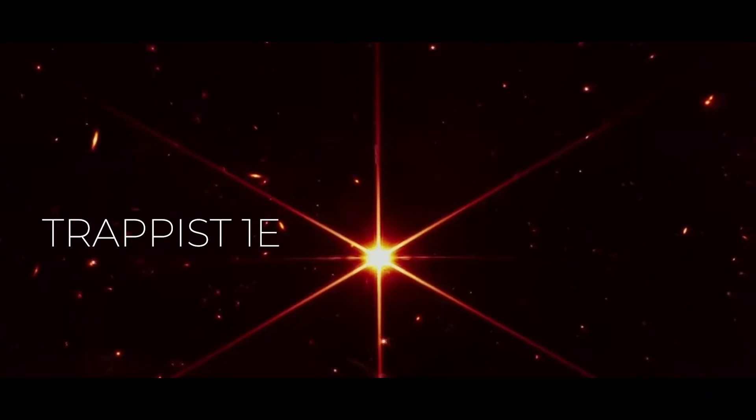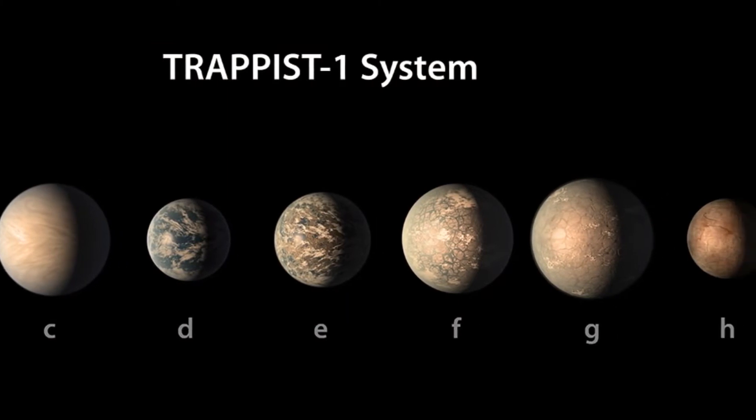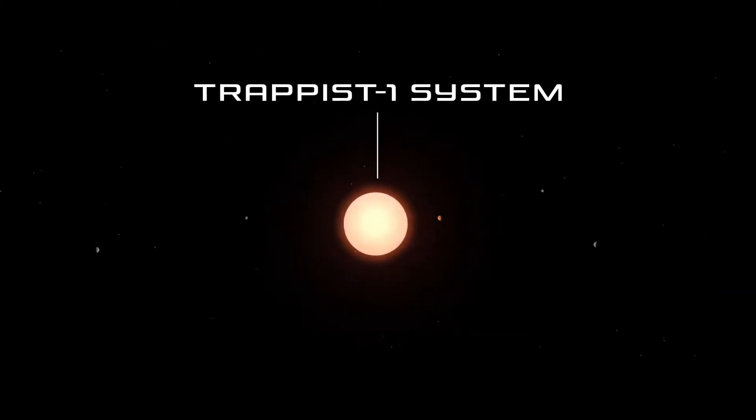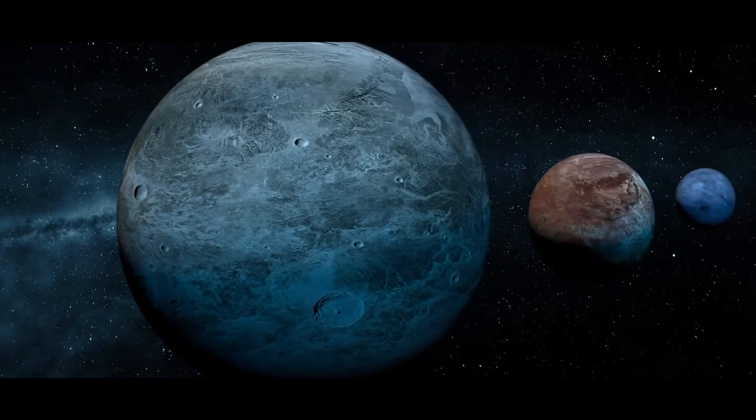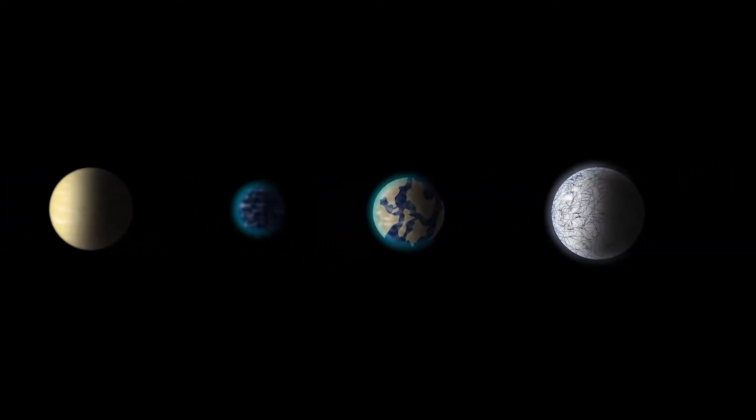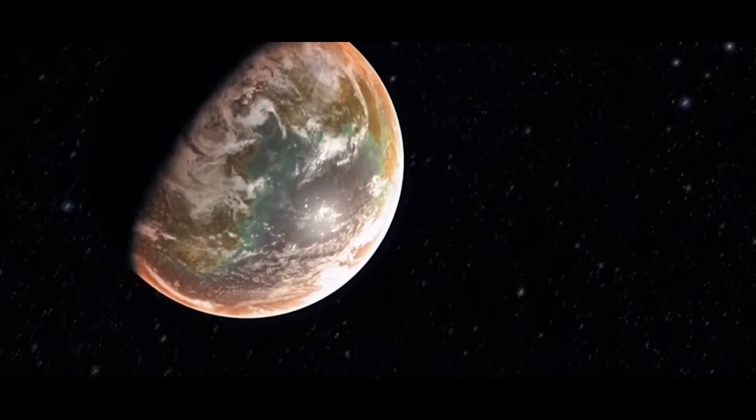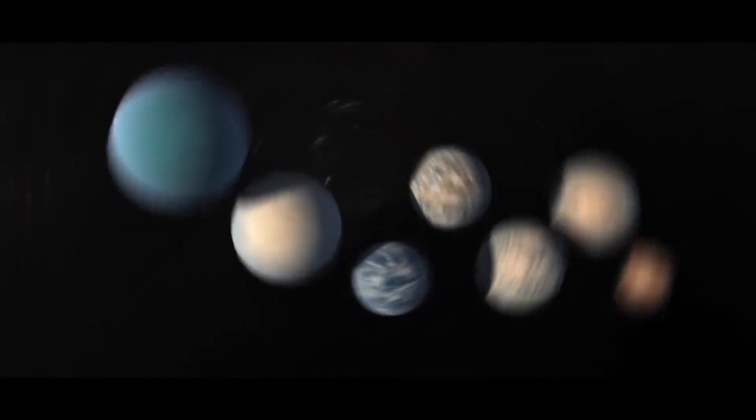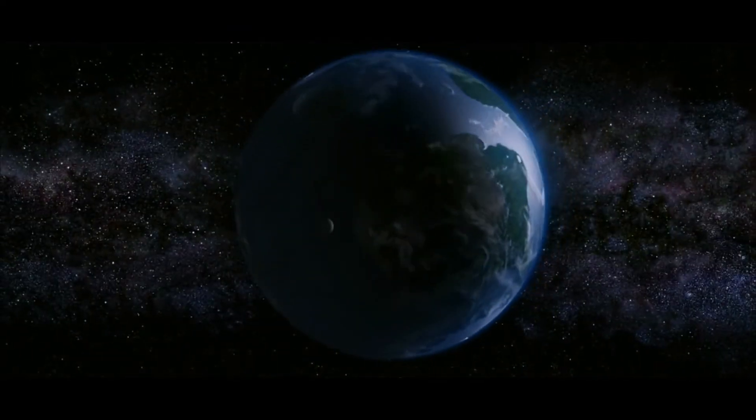Number 6: TRAPPIST-1e. This is not a planet, but a habitable set of planets that orbit the star TRAPPIST-1. These are the closest Earth-sized planets ever discovered in the habitable zone of a star. This solar system is made up of seven planets in total. According to NASA, water on most of these planets likely evaporated early in the system's formation.